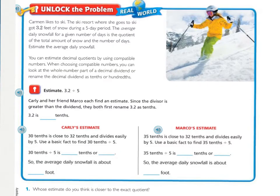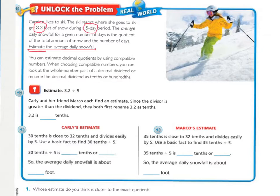Unlock the problem. Carmen likes to ski. The ski resort where she goes got three and two-tenths feet of snow during a five-day period. The average daily snowfall is the quotient of the total amount of snow and the number of days. Estimate the average daily snowfall. You should have underlined 'estimate the average daily snowfall' and circled three and two-tenths and five.